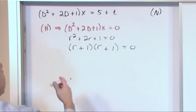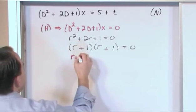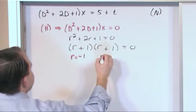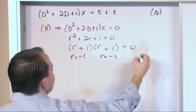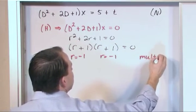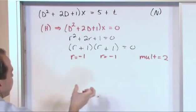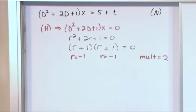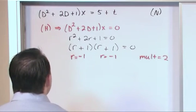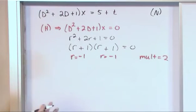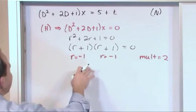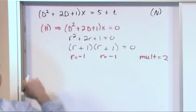So what we find from this is that r is equal to negative one and r is equal to negative one. So in other words, the multiplicity is two. So the root is a double root. The root is r is equal to negative one, multiplicity of two. So this is enough information by itself to calculate and to write down the solution to the related homogeneous guy.